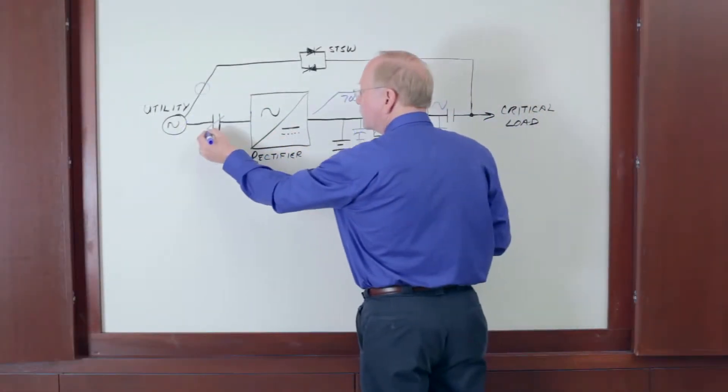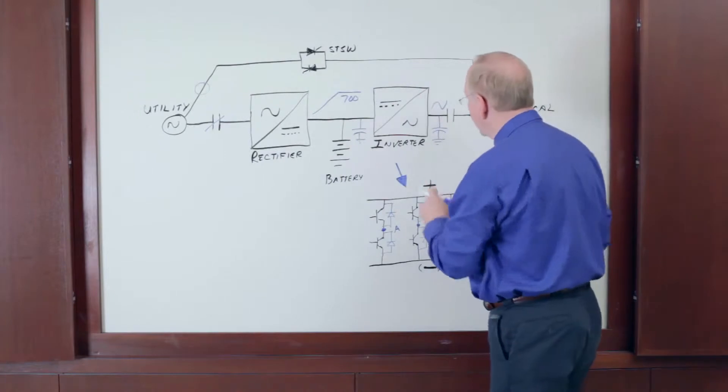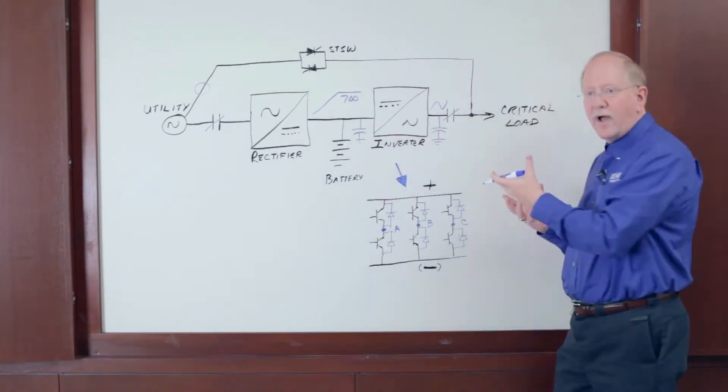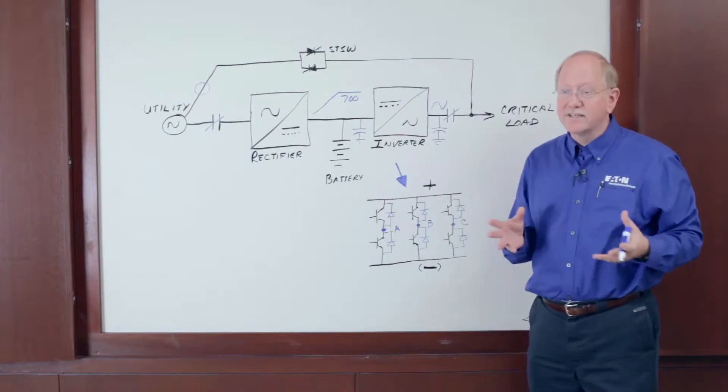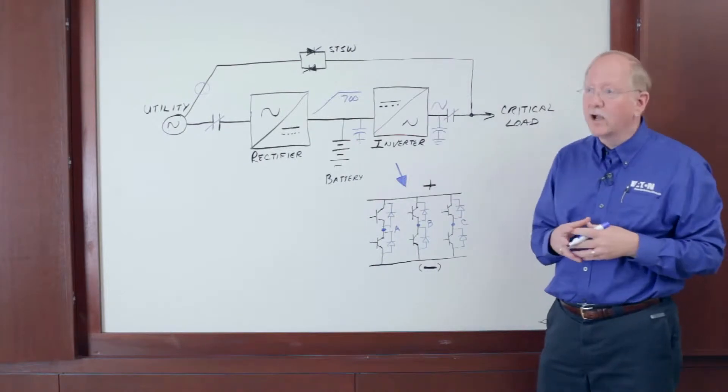So close the input contactor, ramp the rectifier for 30 seconds, turn on the inverter, synchronize the inverter, finally close the output contactor, and you have an output from the UPS. The process takes two to three minutes. It's much too long. So how does it work in a modern eco mode?